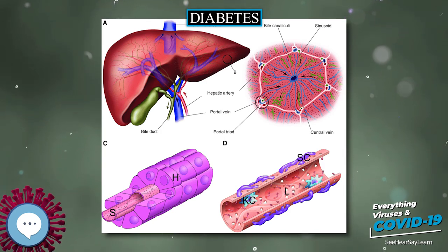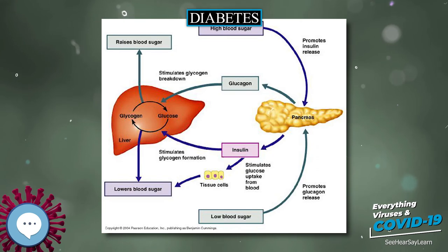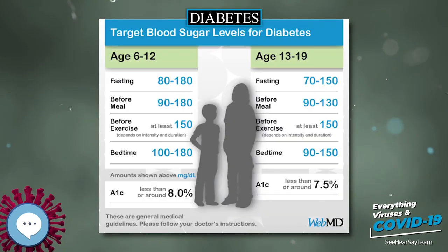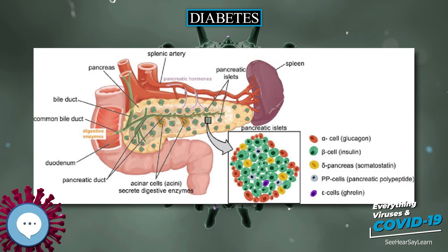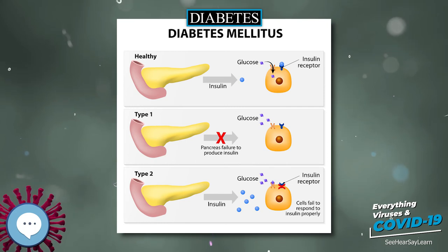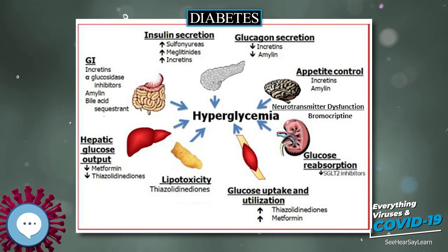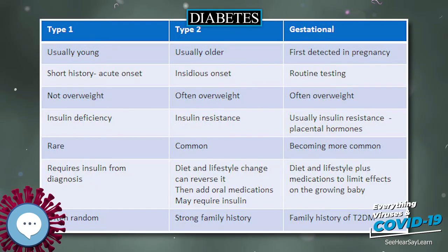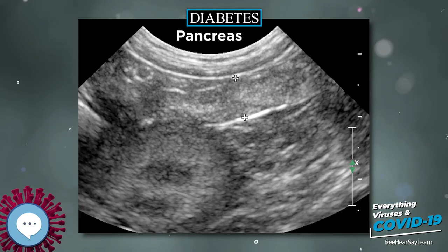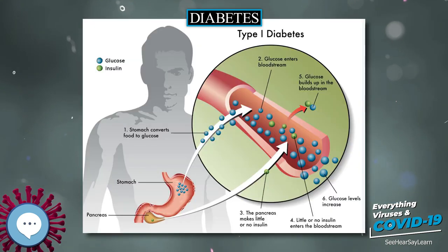In 2017, 425 million people had diabetes worldwide, up from an estimated 382 million people in 2013 and from 108 million in 1980. Accounting for the shifting age structure of the global population, the prevalence of diabetes is 8.8 percent among adults, nearly double the rate of 4.7 percent in 1980. Type 2 makes up about 90 percent of the cases. Some data indicate rates are roughly equal in women and men, but male excess in diabetes has been found in many populations with higher type 2 incidence, possibly due to sex-related differences in insulin sensitivity, consequences of obesity and regional body fat deposition, and other contributing factors such as high blood pressure, tobacco smoking, and alcohol intake.